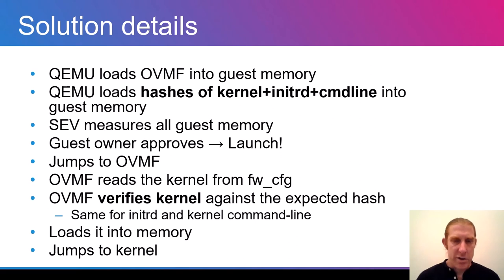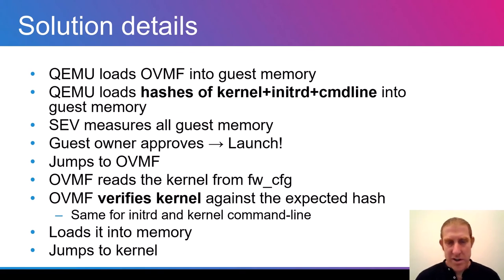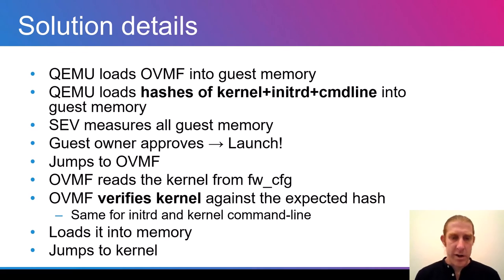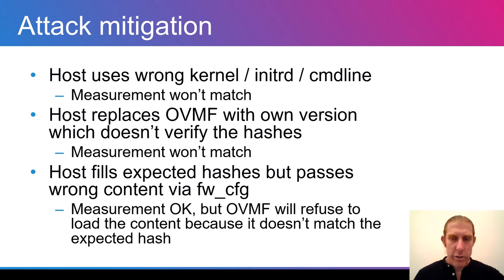Here is how the solution works end to end. QEMU loads OVMF into guest memory and then loads the hashes of the kernel, initrd, and command line into guest memory as well — this is the hash table we just saw. SEV measures the entire guest memory, which now includes both OVMF and the hashes. If the guest owner approves, the VM starts from OVMF. OVMF reads the kernel from the firmware config device — an insecure device — but then verifies the content it just read against the expected hash from the hash list. Similarly for initrd and command line. If everything matches, it loads the content into memory and starts running the kernel.